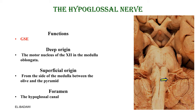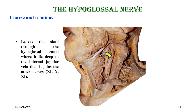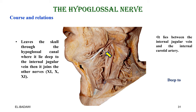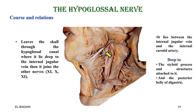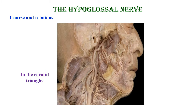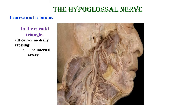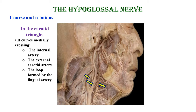The hypoglossal nerve exits through the hypoglossal canal, which lies deep to — or medial to — the internal jugular vein. It then joins the other three nerves between the internal jugular and the internal carotid, lying deep to the styloid apparatus and the posterior belly of the digastric. In the carotid triangle it curves medially, crossing the internal carotid, the external carotid, and the loop formed by the lingual artery — which is a landmark for the hypoglossal nerve, where the lingual artery loops upward and the nerve curves downward.